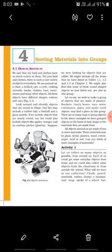All objects around us are made of one or more materials. These materials may be glass, metal, plastic, wood, cotton, paper, mud and soil. Can you think of more examples of materials? Let us discuss it through Activity 1.